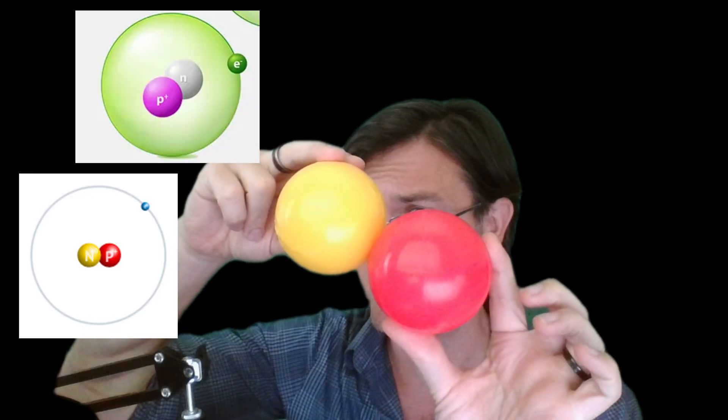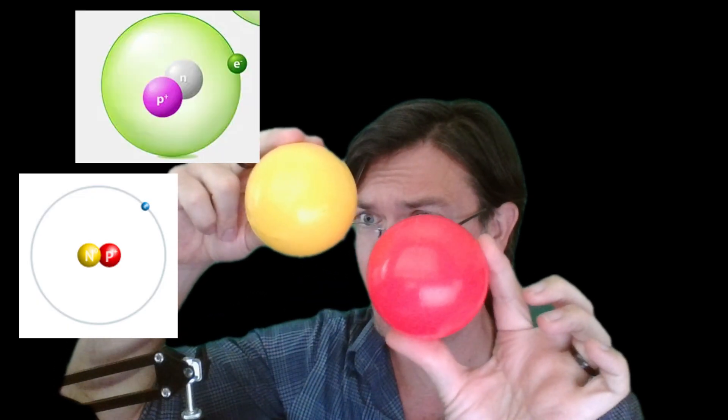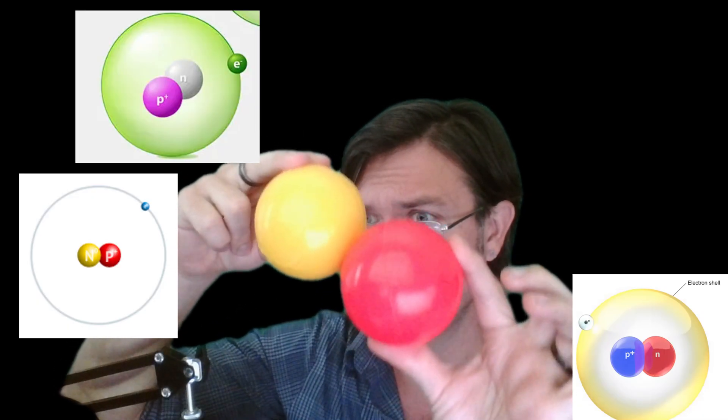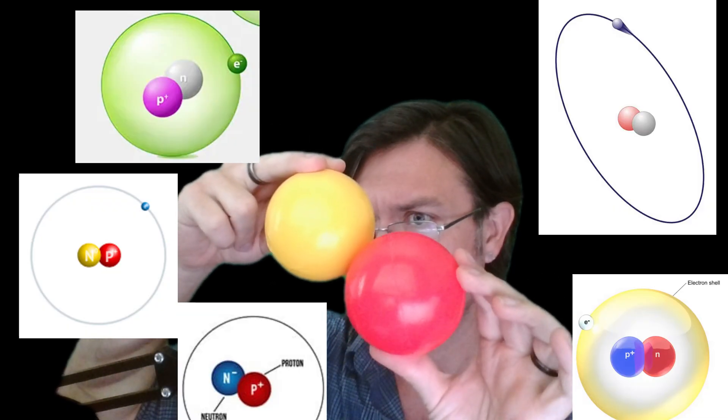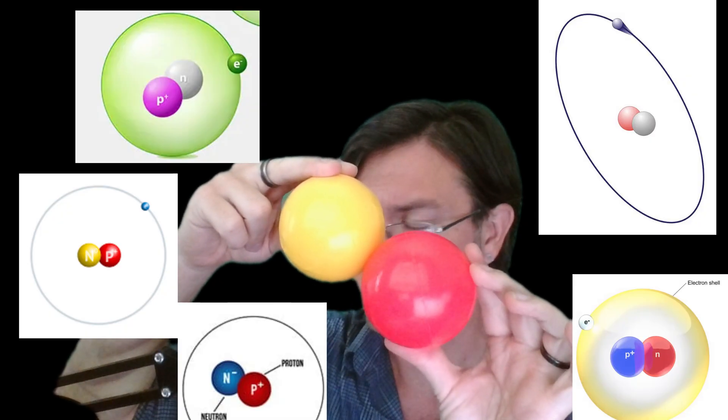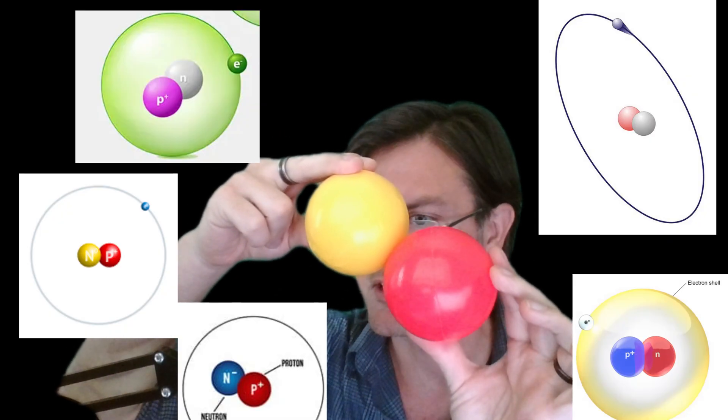Now you will see every depiction shown as two spheres stuck together like this. A proton and a neutron stuck together by the strong force in every description I've ever seen of them.